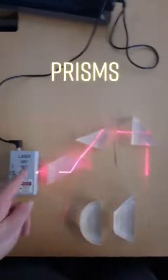Here I'm showing how prisms manipulate a laser beam. A prism is a block of glass with flat edges. You can see through the edges of it.